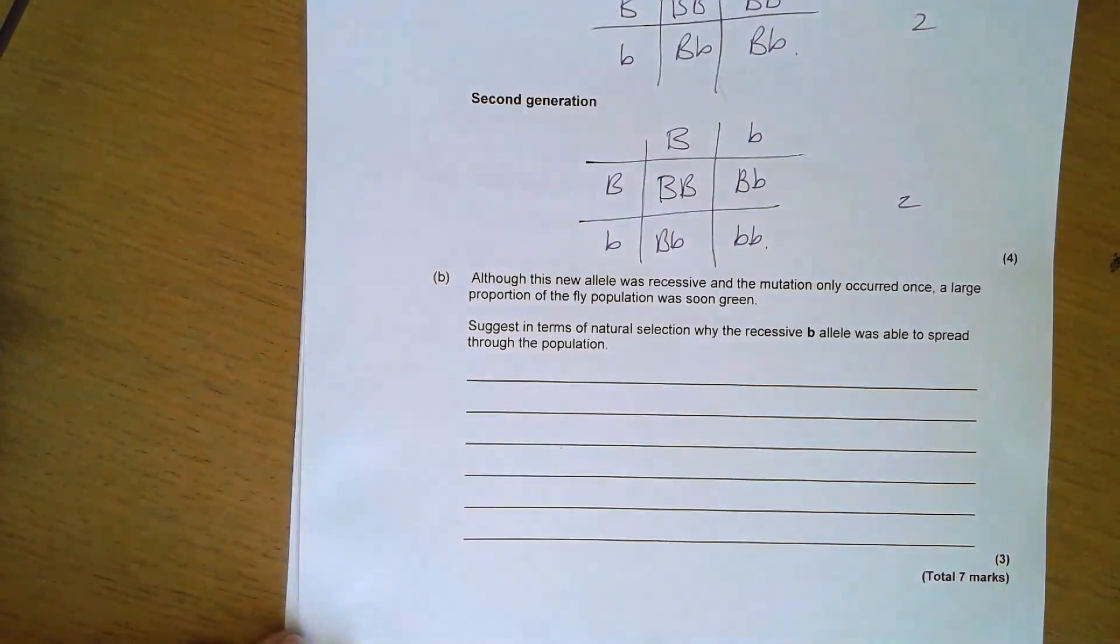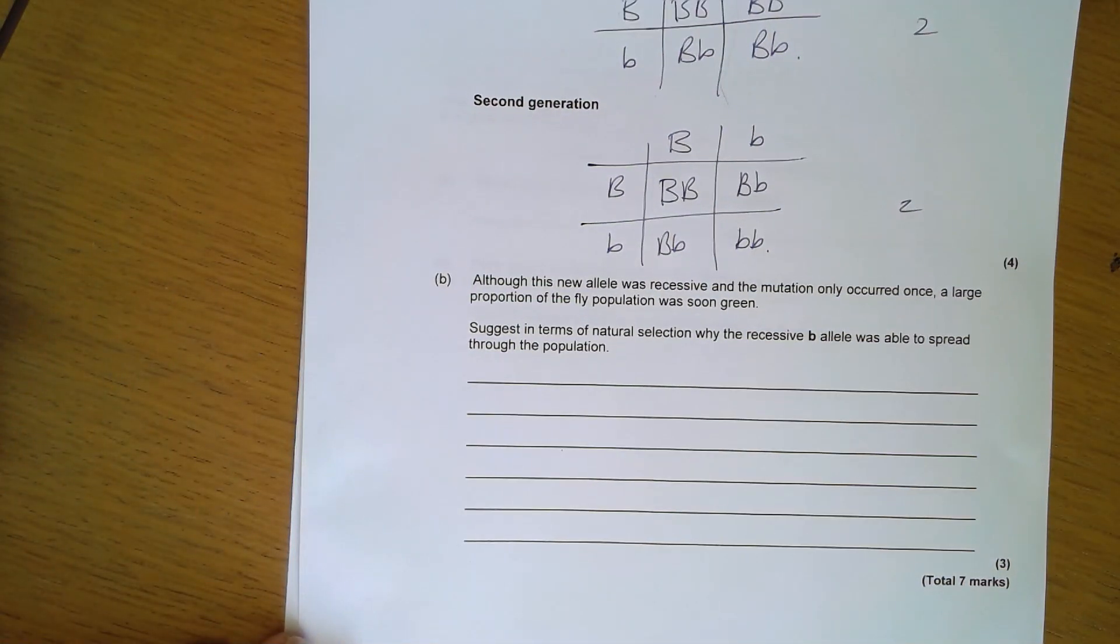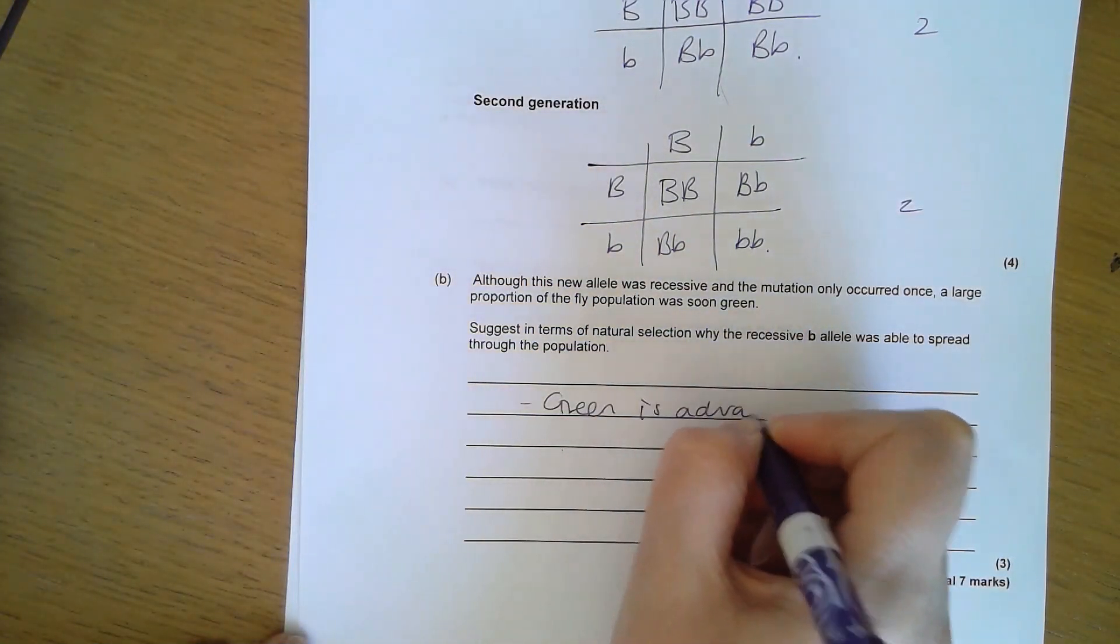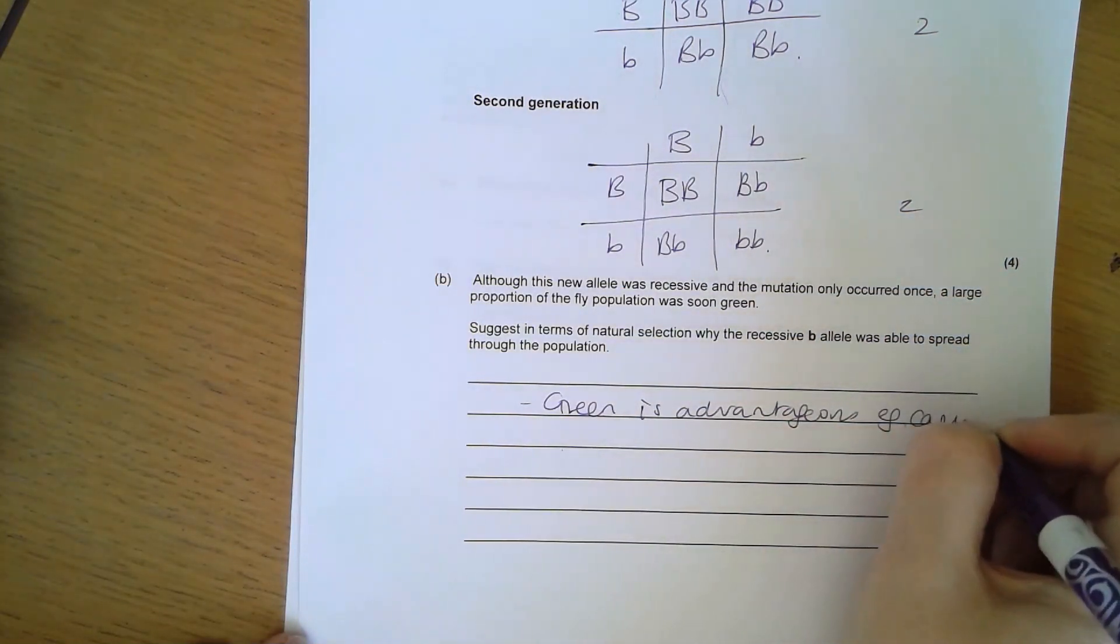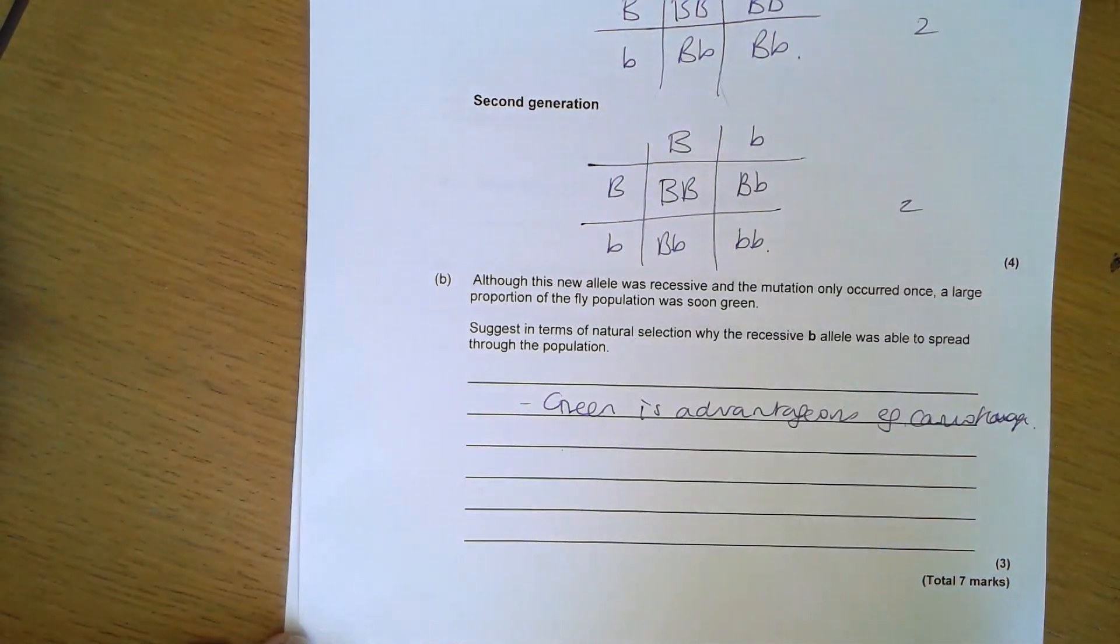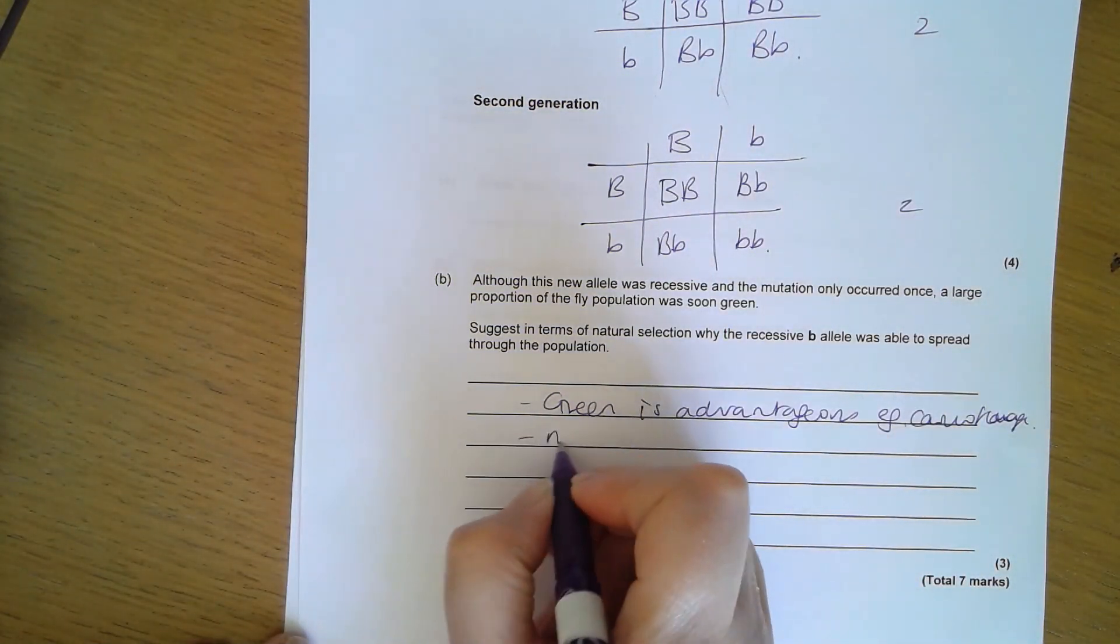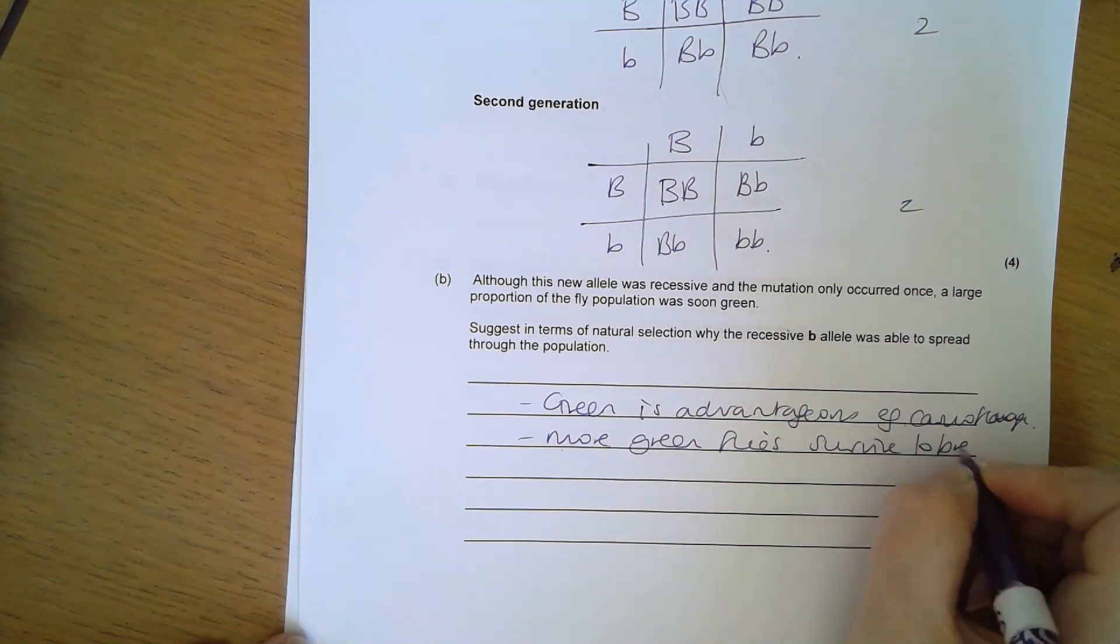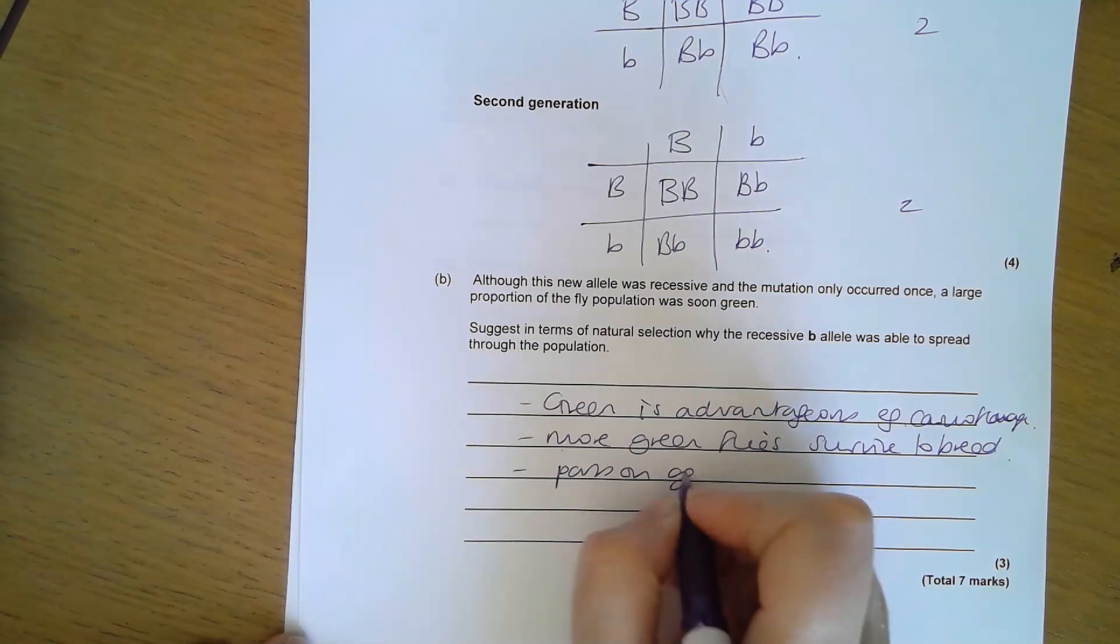Although this new allele was recessive and the mutation only occurred once, a large proportion of the fly population ended up being green. Why was the recessive b allele able to spread so quickly? Natural selection is all about the idea that a characteristic that is beneficial will mean that those organisms will survive and pass on that gene. So green must be advantageous, for example camouflage. Therefore more of the green flies will survive to breed and pass on the genes to the next generation.